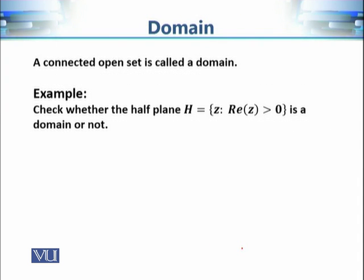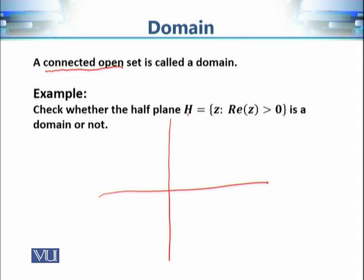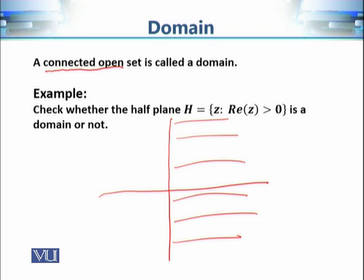A connected open set is called a domain. A region is a domain if it is both connected and open. Consider the half-plane H: the set of all complex numbers whose real part is strictly greater than 0 — that is, everything to the right of the imaginary axis, not including the imaginary axis itself.